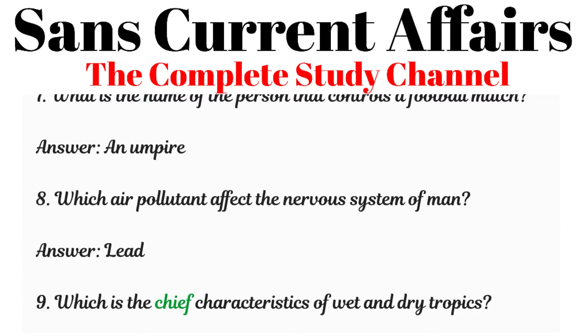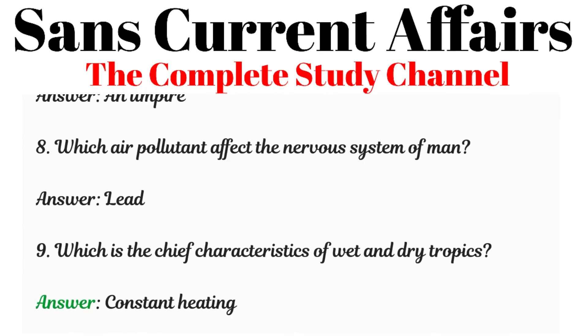Question 9: Which is the chief characteristic of wet and dry tropics? Answer: Constant heating.